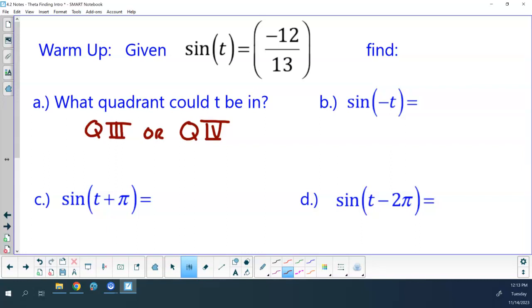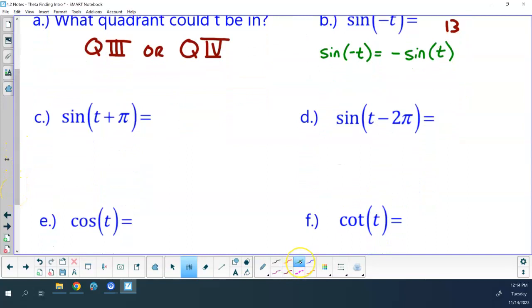From the obviosities, the sine of negative t, I believe this was number six on the obviosities, was equal to negative sine of t. So, the negative of negative twelve thirteenths is positive twelve thirteenths for that one.